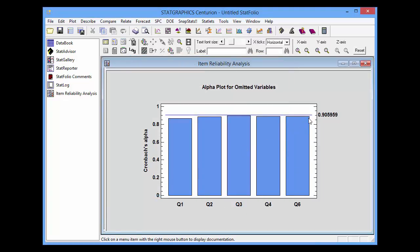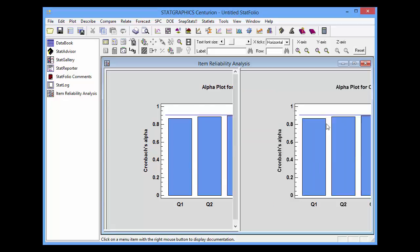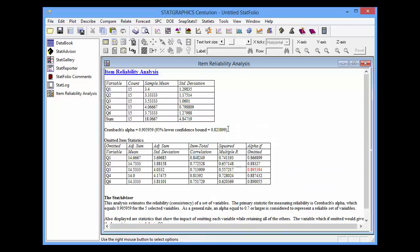That recalculates Cronbach's alpha, and it's now moved up to 0.906, and even the 95% lower bound is now greater than 0.7.